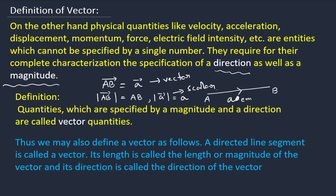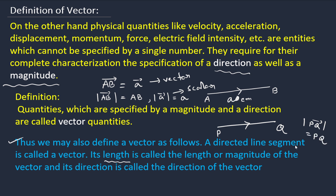A vector means direction as well as magnitude, while scalar means only magnitude. We can also define a vector as a directed line segment. A directed line segment PQ̄ is a vector because it has both magnitude — the length from P to Q — and direction — it starts from P and goes to Q.